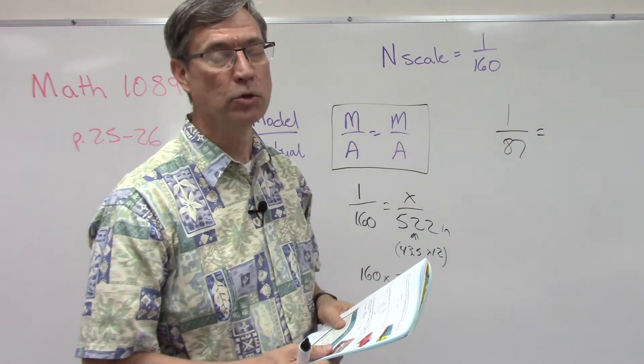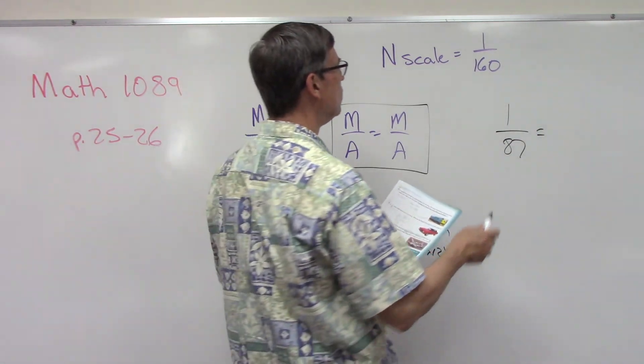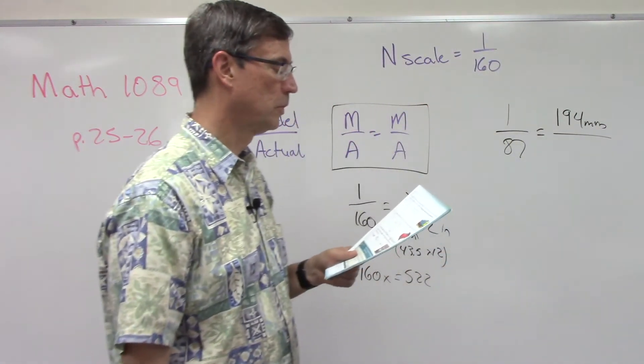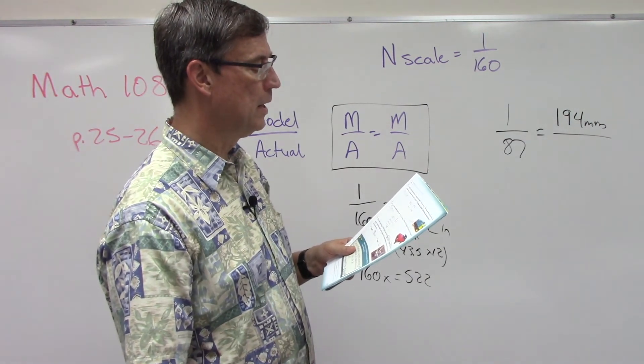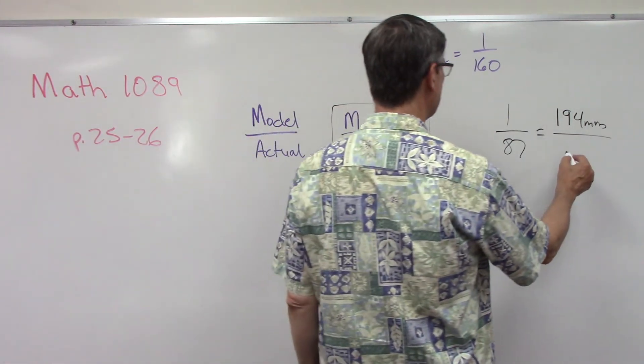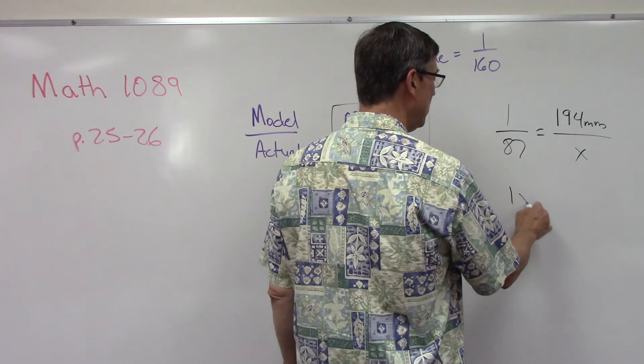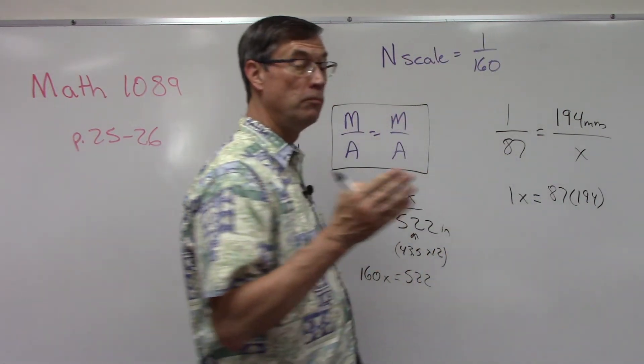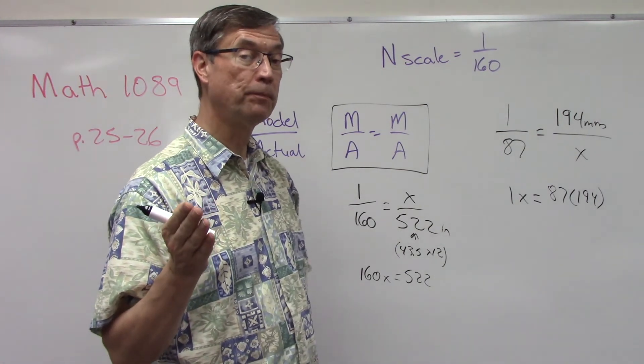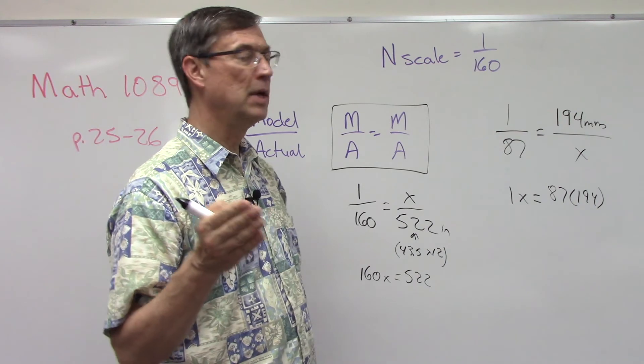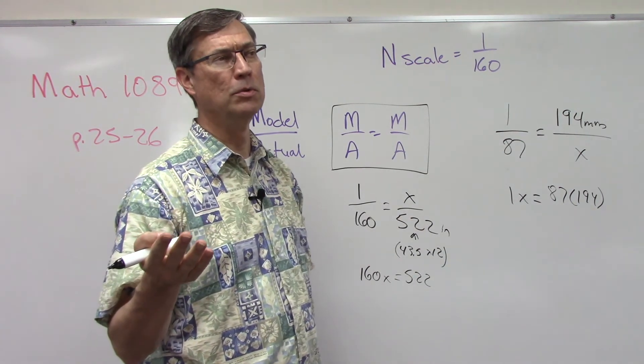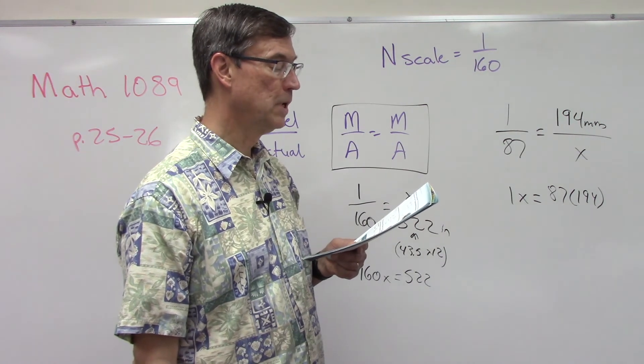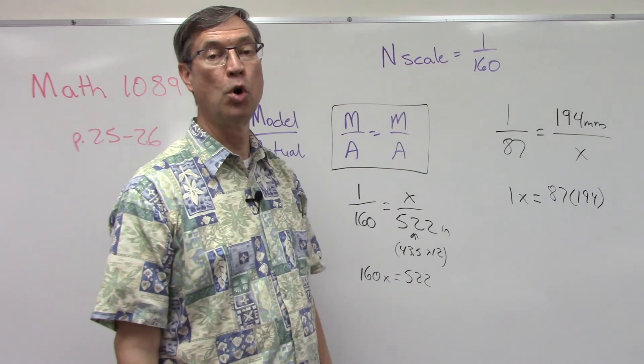So that goes up here - 194, and that's in millimeters. And then we're going to find the length in meters, so this is what we don't know, call that X. So 1X equals 87 times 194. When you do that math, you can use your calculator. When you get the answer, that's in millimeters, so that's not our final answer. We have to move the decimal - divide by 1000, so moving the decimal three times gives us the same effect and that will give you the answer in meters. And then it says to round your answer to the nearest whole meter, so we don't need a decimal, so you're going to get a nice round number.